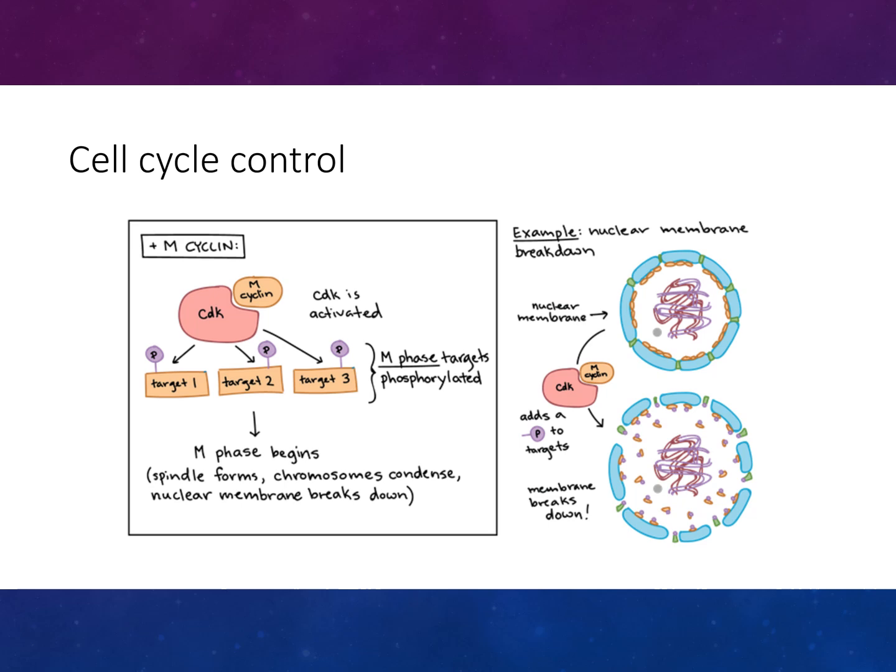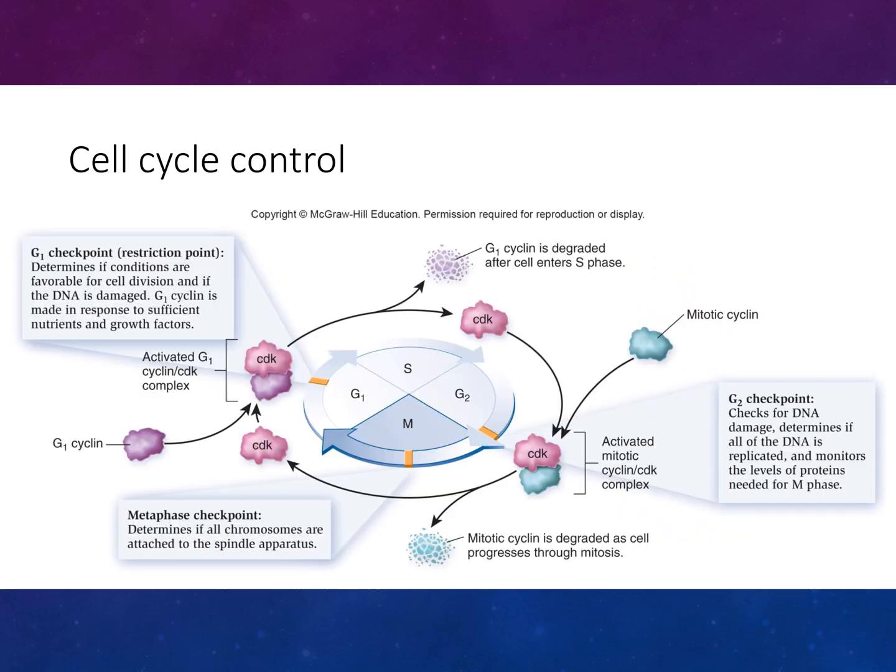Here's an example on the right-hand side of nuclear membrane breakdown. There's also a diagram looking at the different checkpoints — the metaphase checkpoint, the G2 checkpoint, and the G1 checkpoint — which you can look at in more detail.